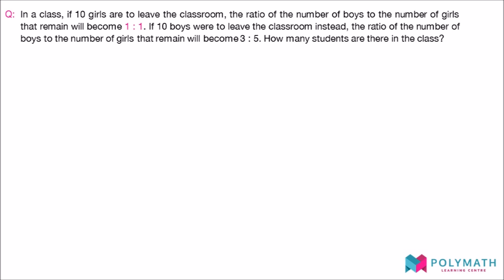As usual, at Polymath Learning Centre, we focus on teaching you how to identify the question rather than just providing you with the solutions. First of all, a total unchanged question involves at least two relationships which can be expressed in ratios.